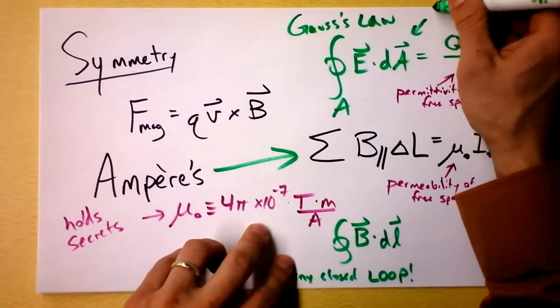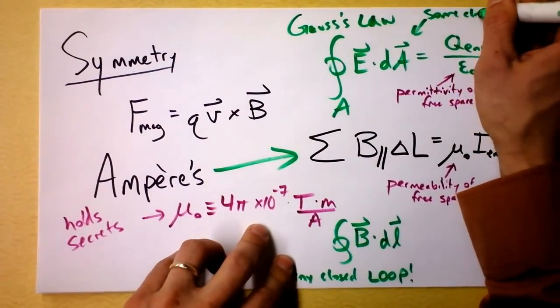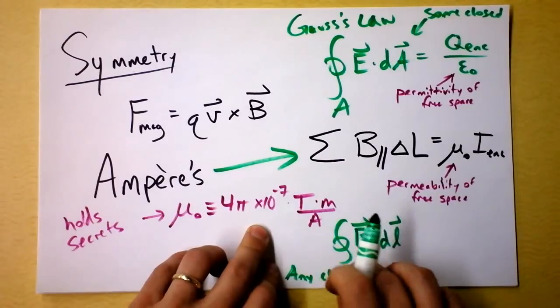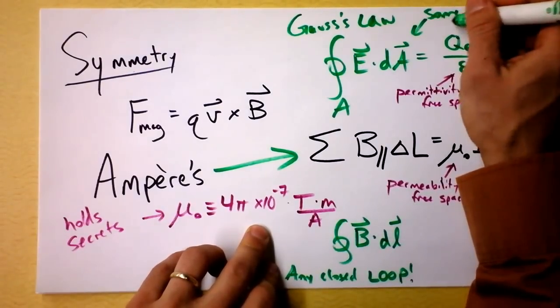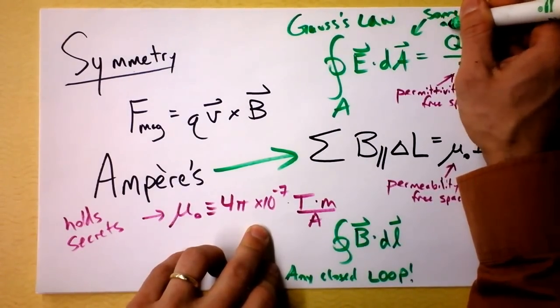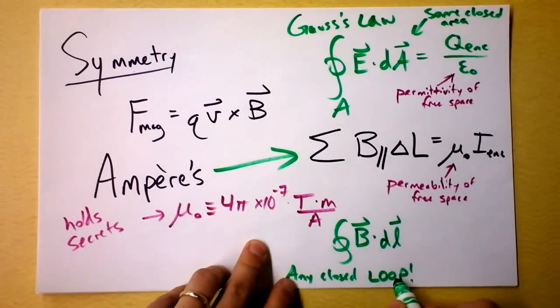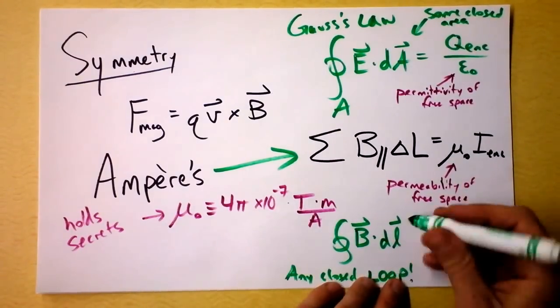And this is some closed area. So I would have to enclose a volume with this. In this loop I'm just going to be enclosing an area. So some closed area, which encloses a volume, and this is some closed loop that encloses an area. Alright, cool.